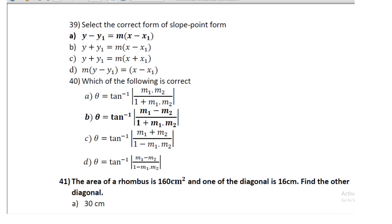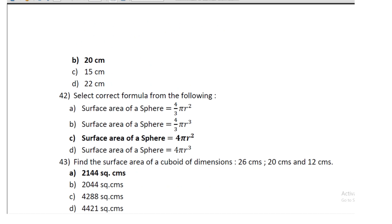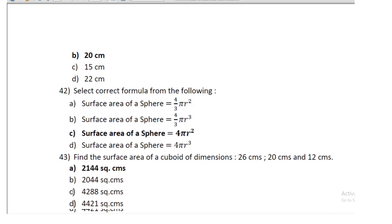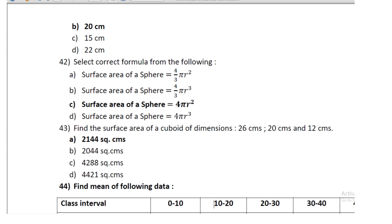Question 37: the area of a rhombus is 160 cm² and one diagonal is 16 cm; find the other diagonal — it is 20 cm. Question 38: select the correct formula for the surface area of a sphere; option C is correct: 4πr². Question 39: find the surface area of a cuboid with dimensions 26 cm, 20 cm, 12 cm; the surface area is 2144 cm².